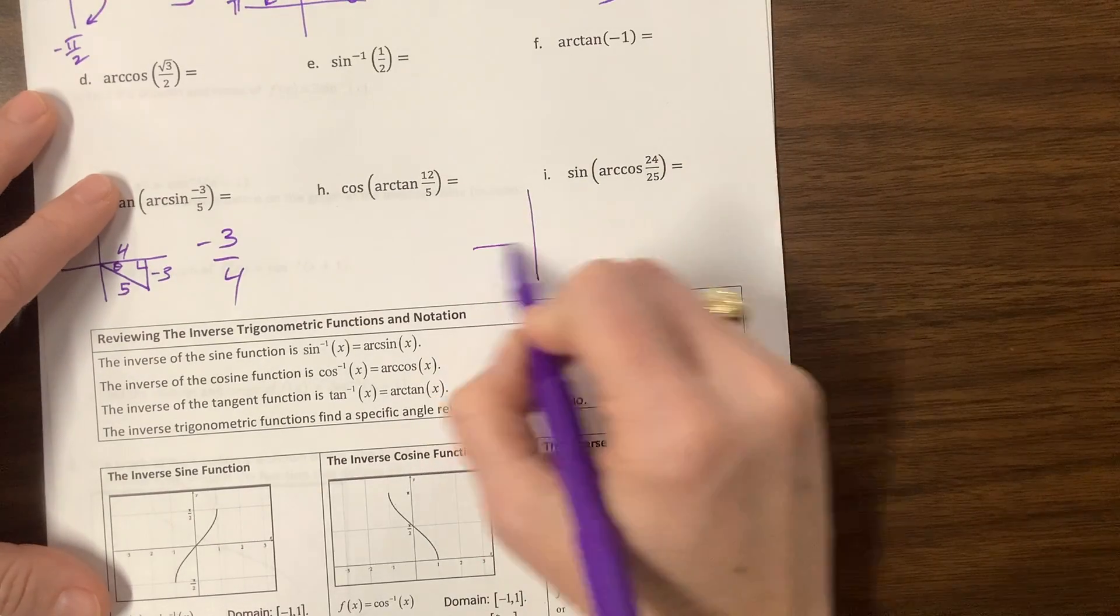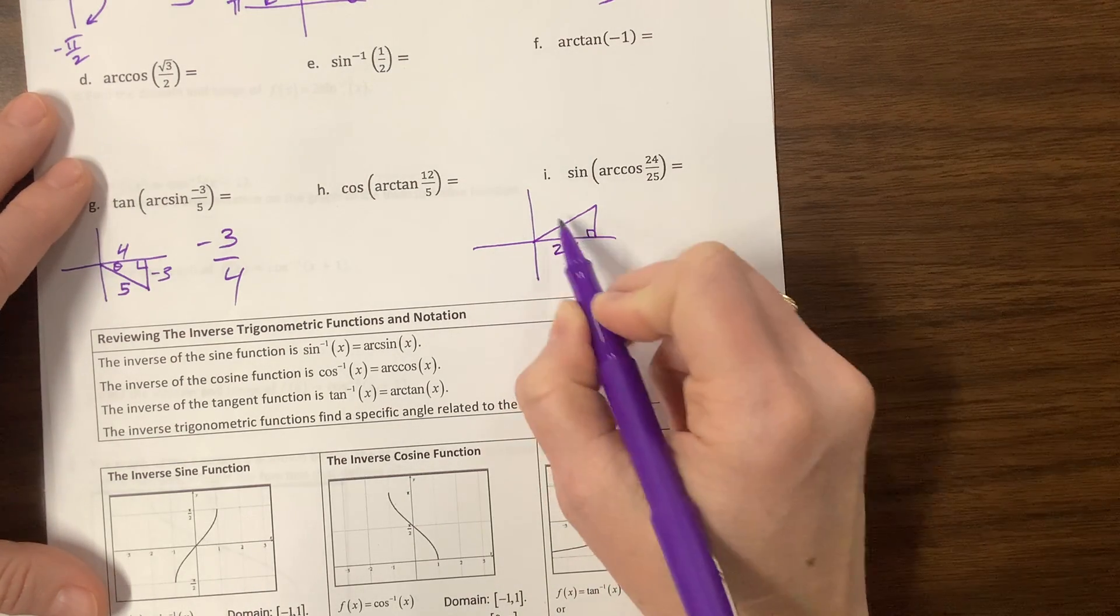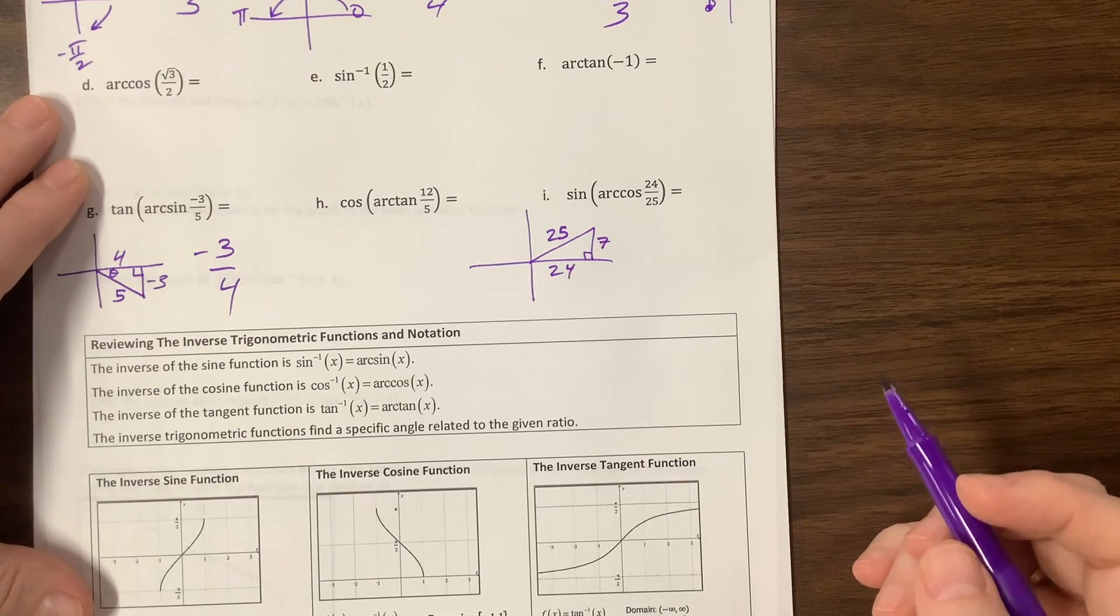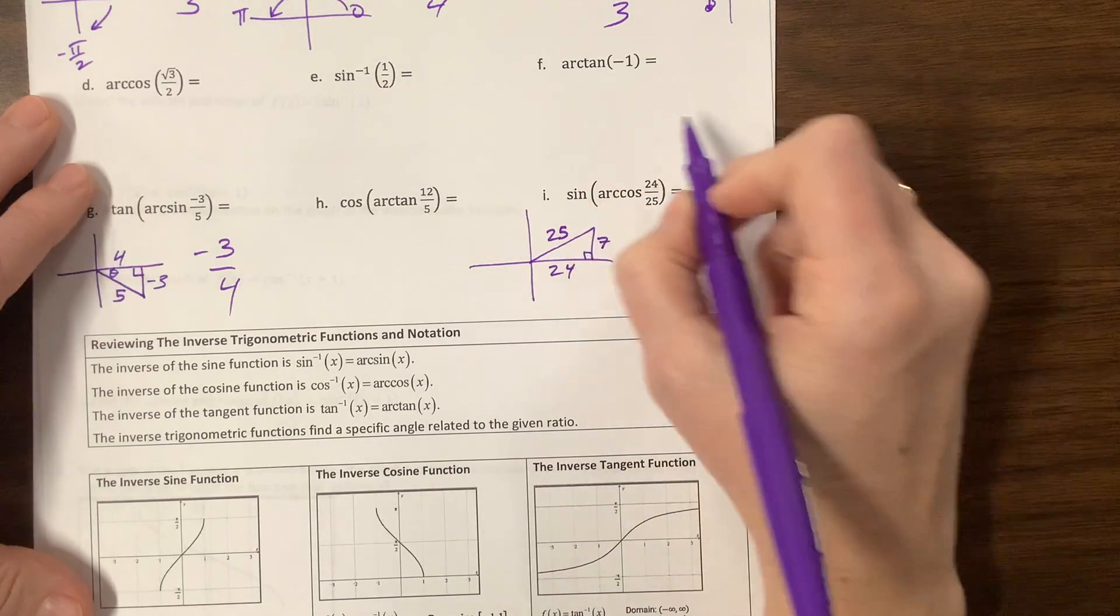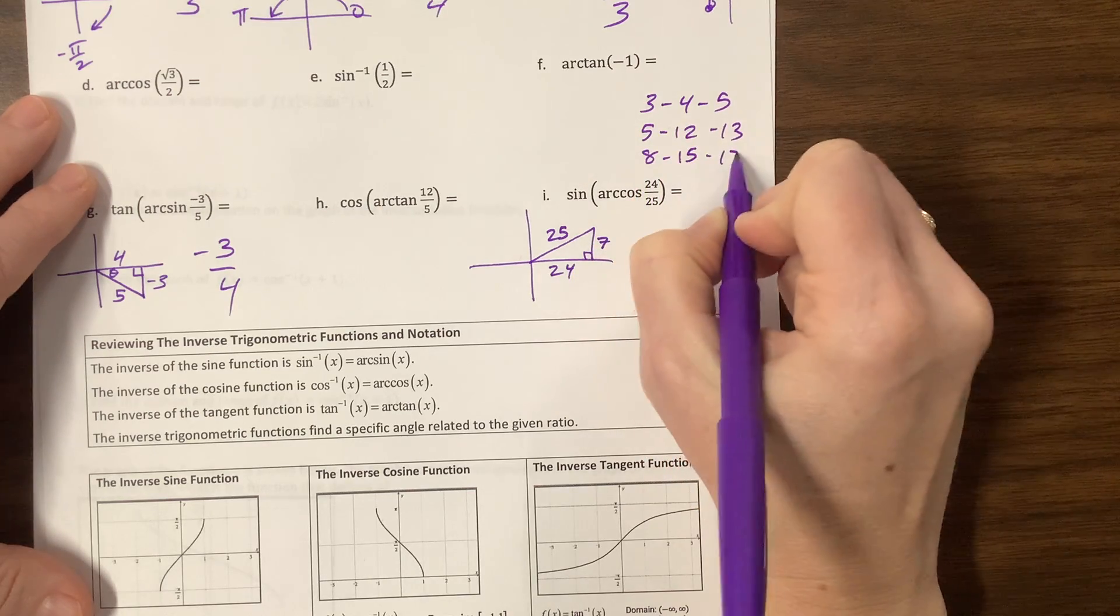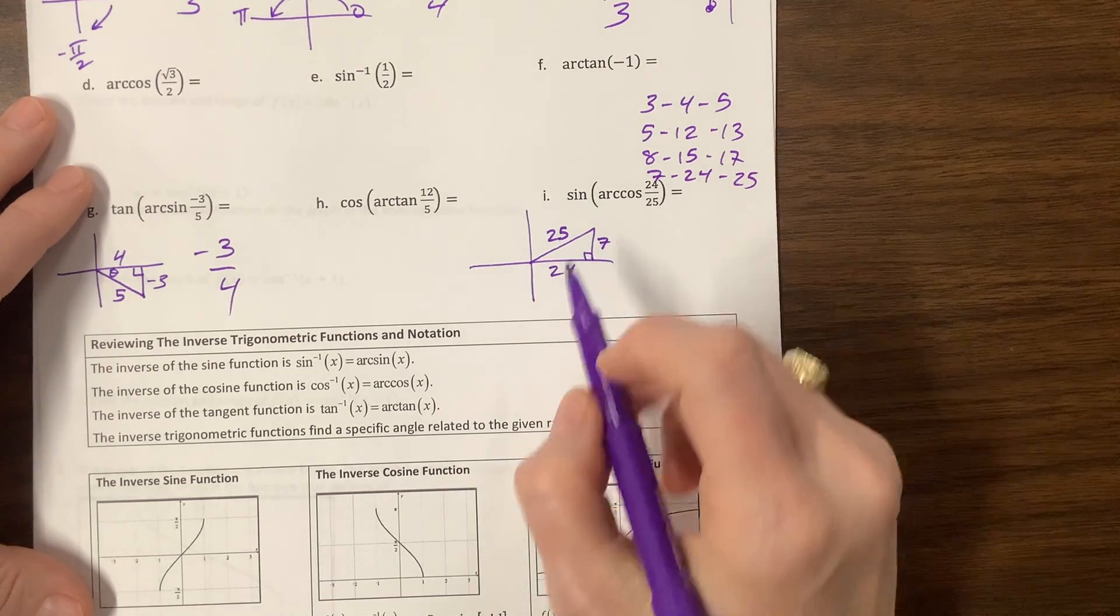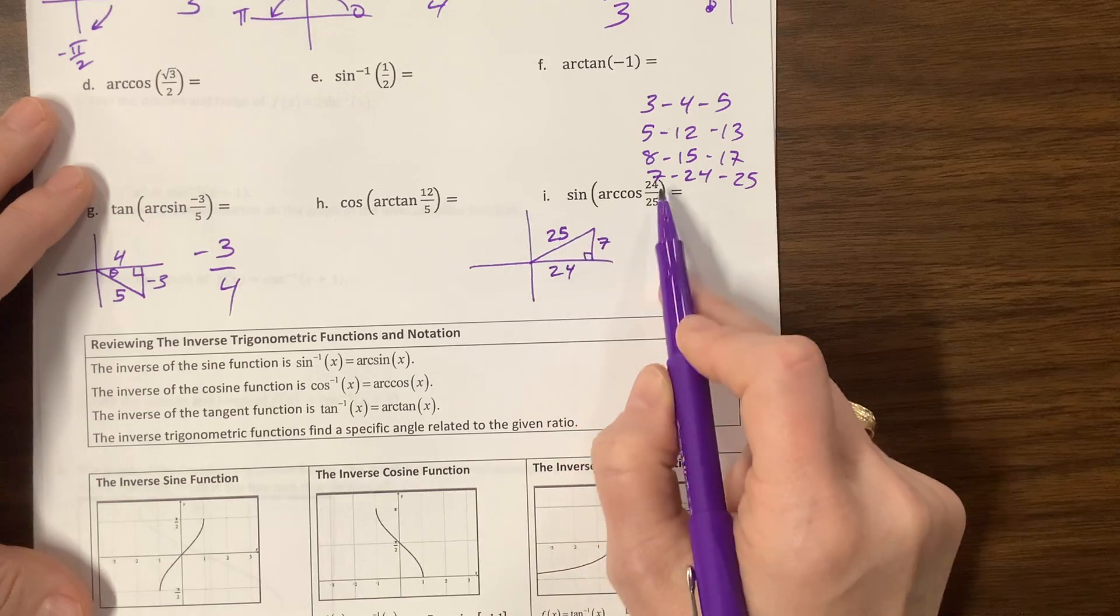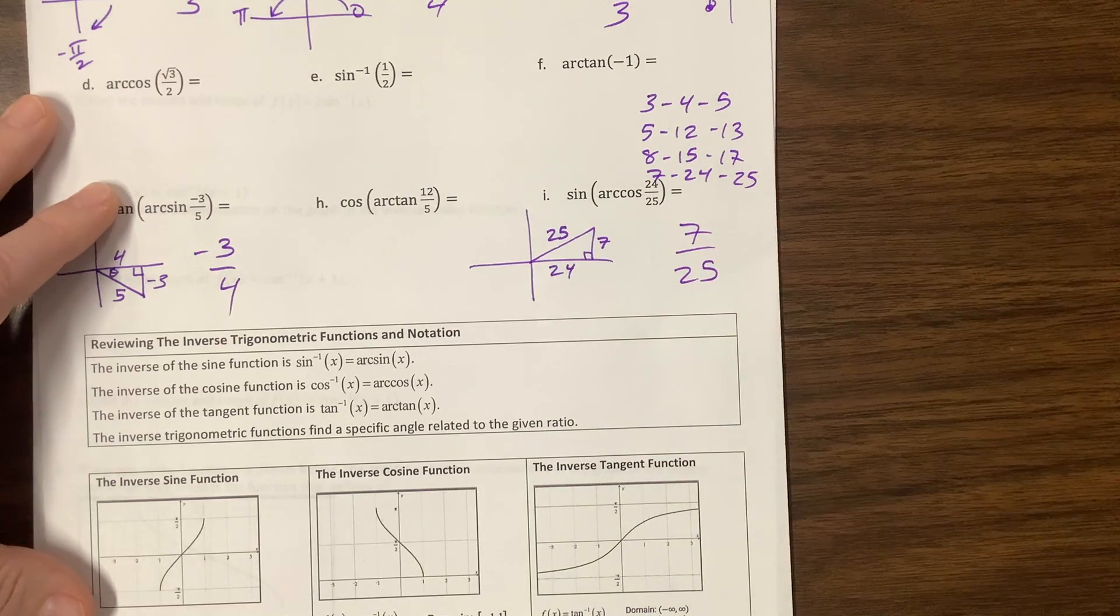We'll do one more. Arc cosine is positive in quadrant 1. Cosine, I'm not overly concerned that I draw it to scale. Cosine is adjacent over hypotenuse. This is a 7, 24, 25. If you remember, I like to sing the song 3, 4, 5, 5, 12, 13, 8, 15, 17, 7, 24, 25. Okay. If you know those, SAT, PSAT, it's all easier. So they're saying, find the sine of the angle whose cosine is 24 over 25. So sine is going to be opposite over hypotenuse, so that's 7 over 25. There you go.